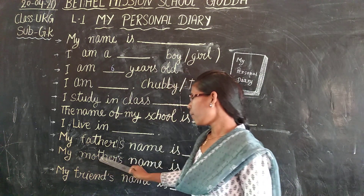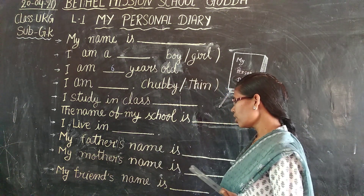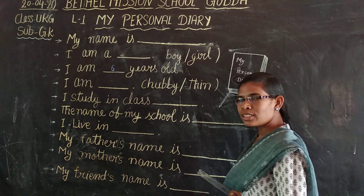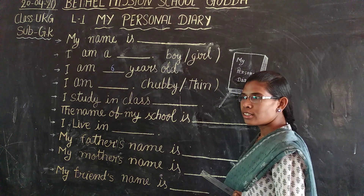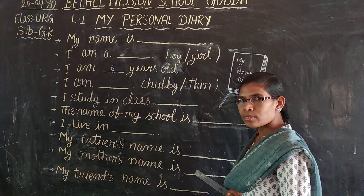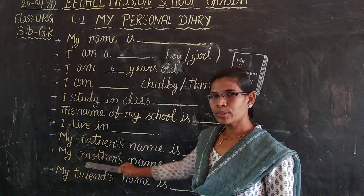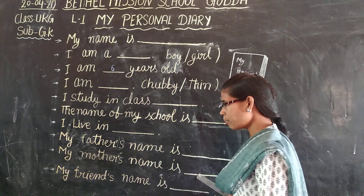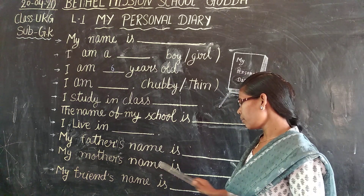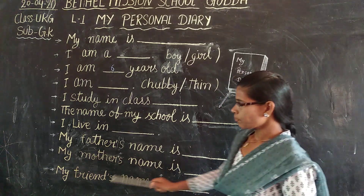Now next line: My mother's name is — whatever your mother's name is, write it here. For example, Gita. You have to write your mother's name. My mother's name is Gita.